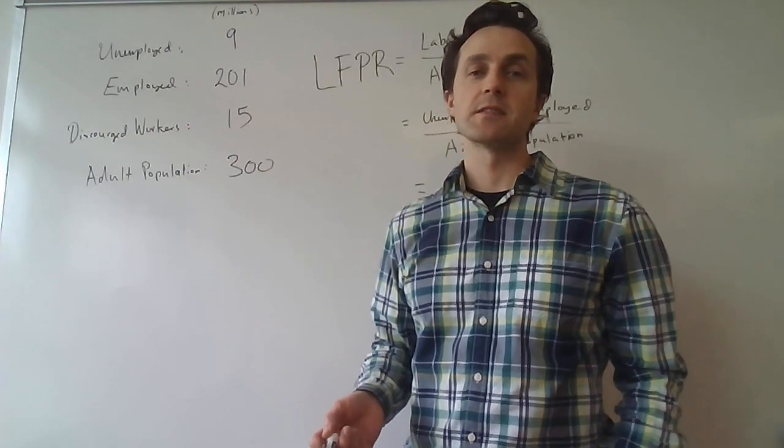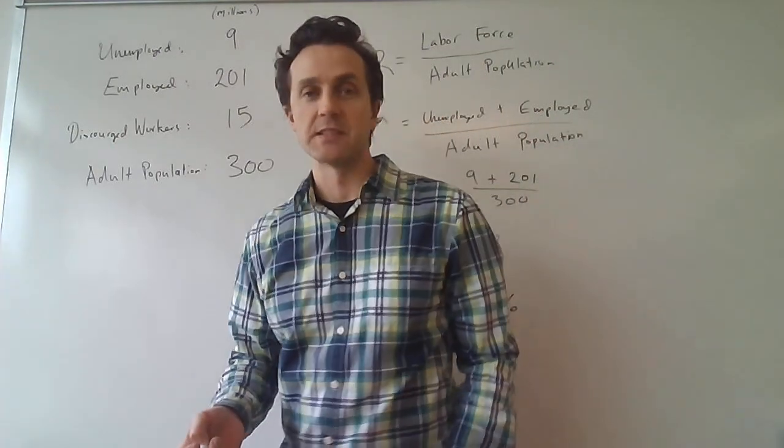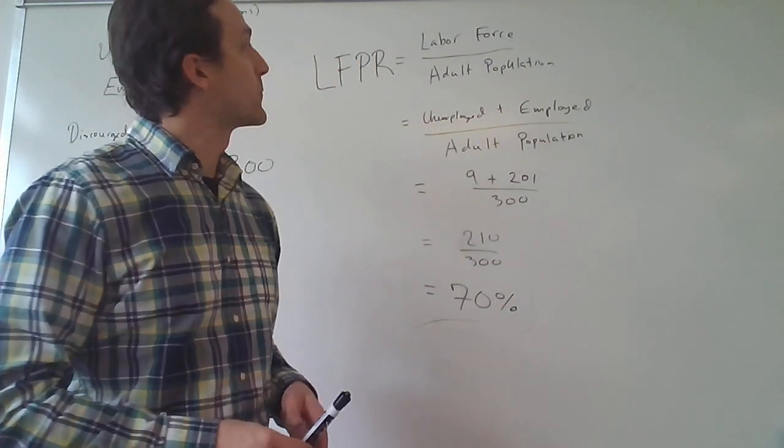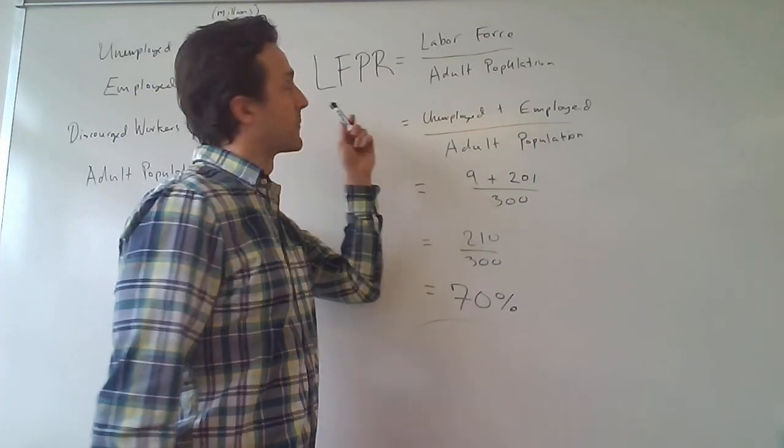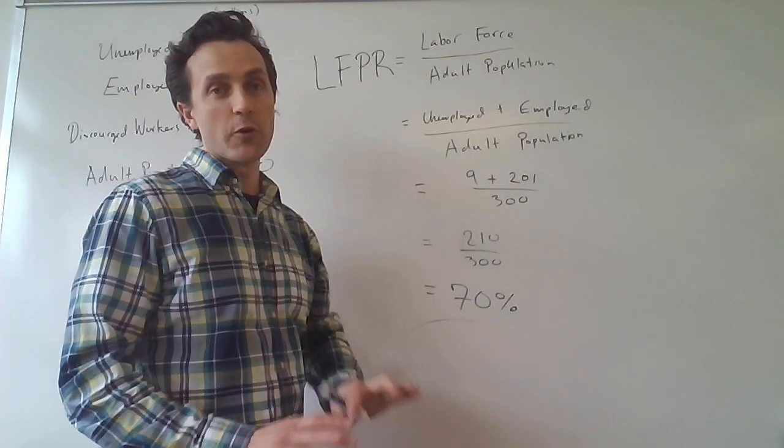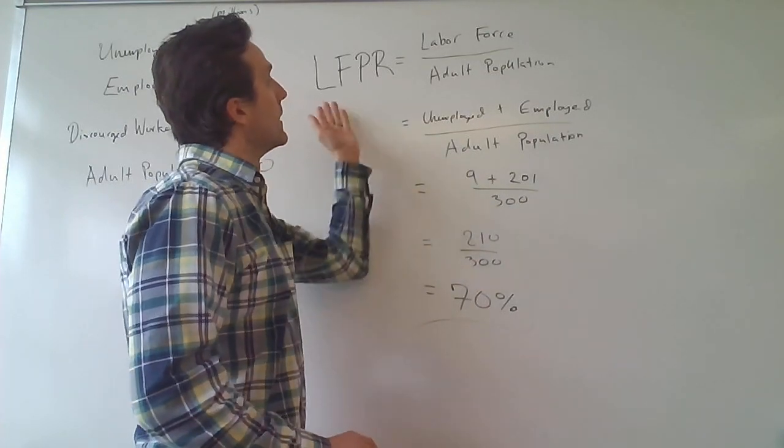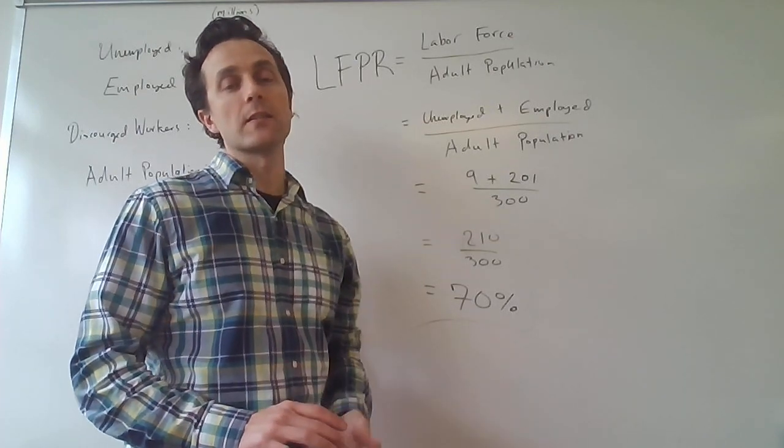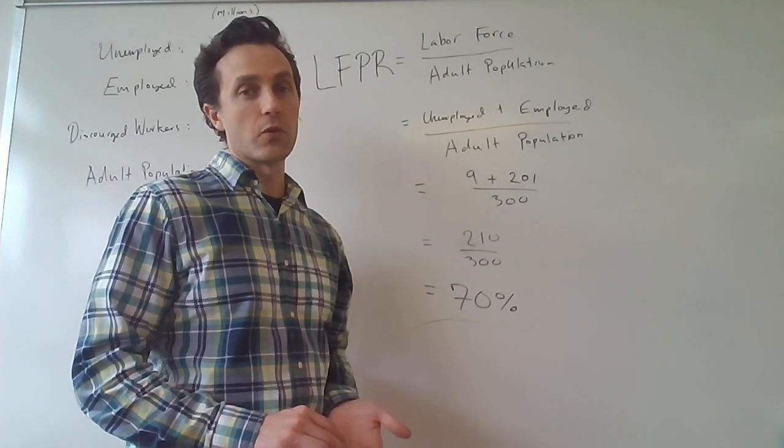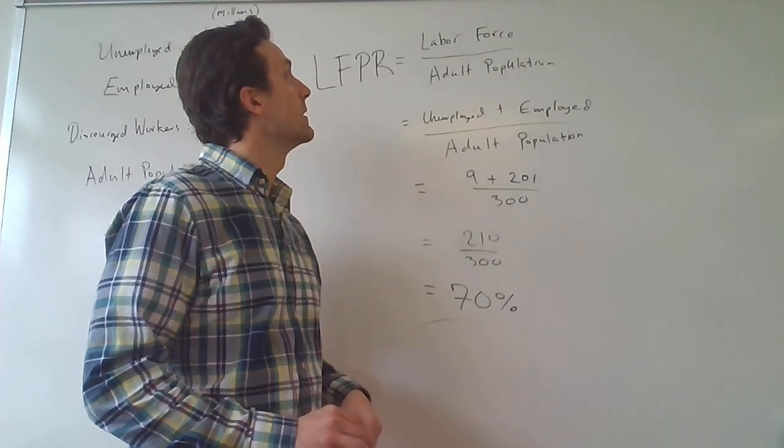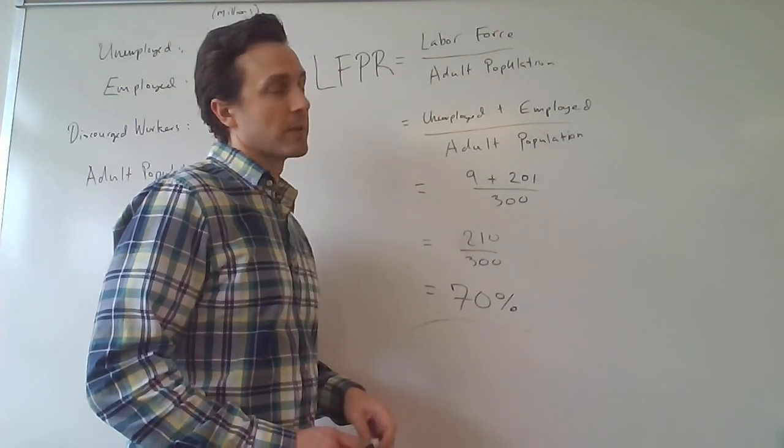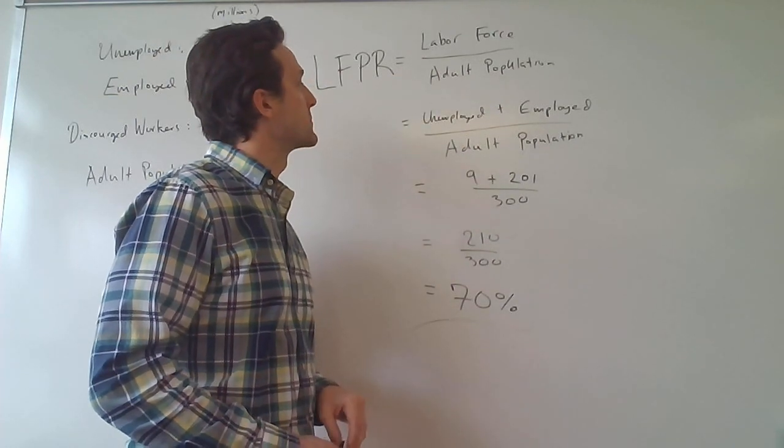So we want to use this information to figure out the labor force participation rate. The labor force participation rate, or LFPR, is equal to the size of the labor force relative to the entire adult working age population. So the labor force divided by the adult population.